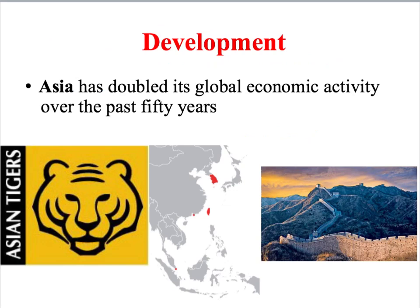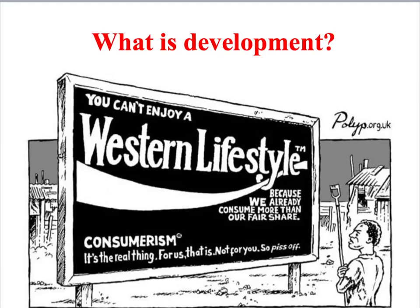For example, the so-called Asian tiger economies of South Korea, Taiwan, Hong Kong, and Singapore are countries that have experienced rapid economic development over the last few decades. In contrast, many poorer countries in sub-Saharan Africa have made little progress in terms of their economic development. One of the central themes of World Sociology is understanding the processes that influence development in poorer countries.